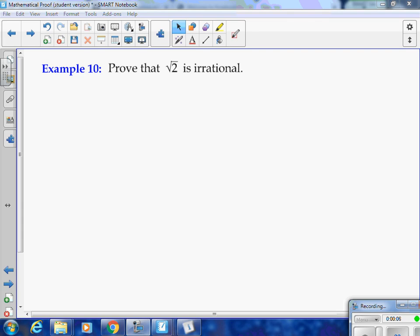Okay, here's Example 10 in a proof topic. We've been looking at proof by contradiction, and we're going to prove that √2 is an irrational number. There's a little bit of mathematical history involved with this one.